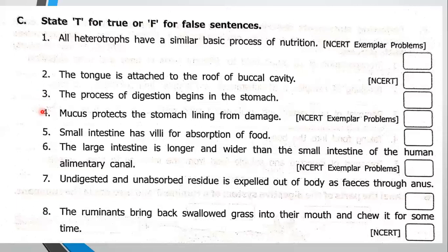Next one: the small intestine has villi for absorption of food. That is correct. There are finger-like projections on the wall of the small intestine called villi, and they help in the absorption of nutrients. So this is true.